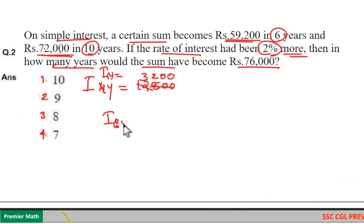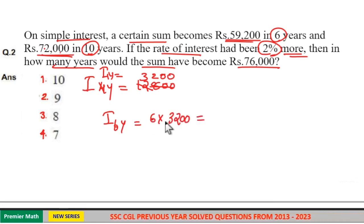Calculate interest received in 6 years, which equals 6 times 3,200. That's 6 times 3 is 18, 6 times 2 is 12. So Rs. 19,200 is the interest received in 6 years.